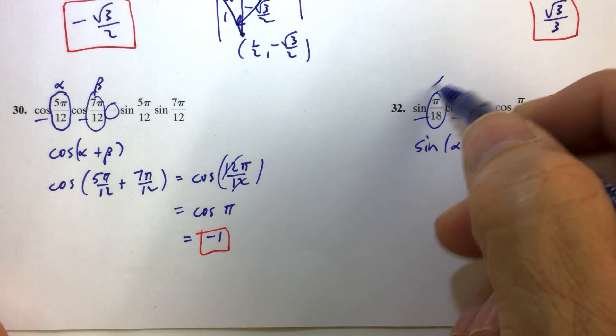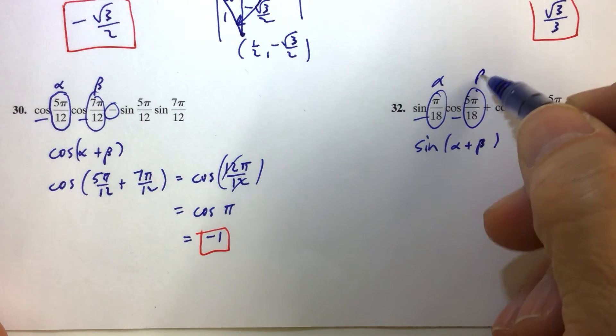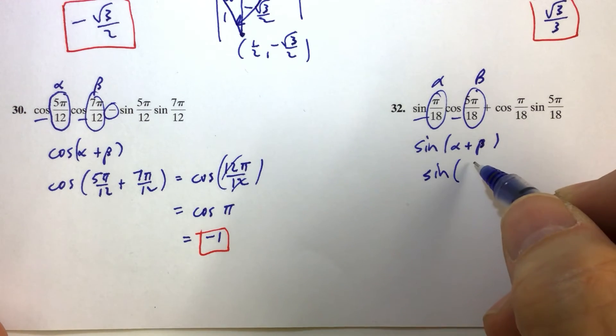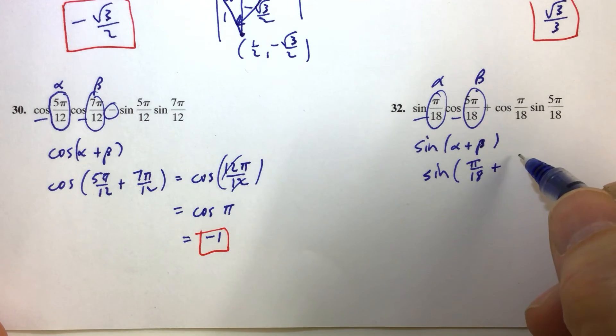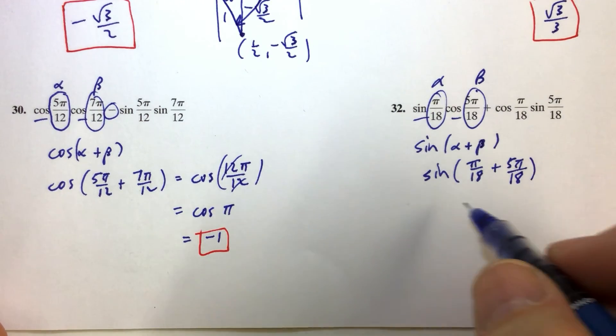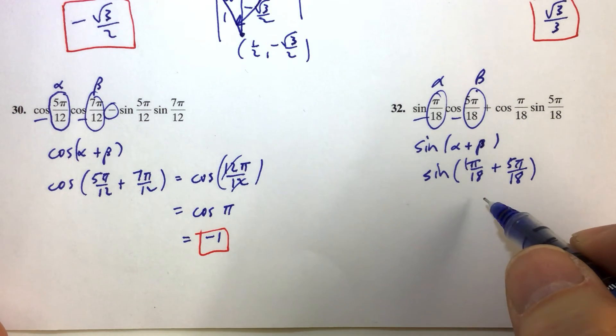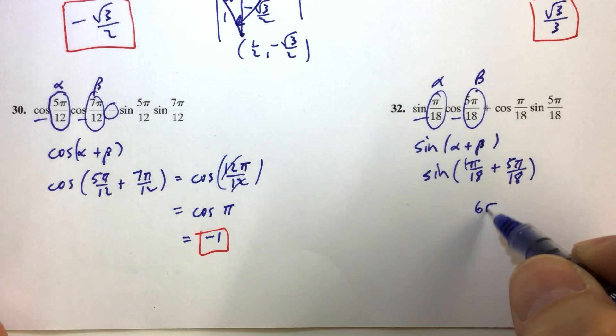And then what's our alpha? Well our alpha is the first angle, our beta is the second angle, and by now, hopefully we're getting the hang of this. We have pi over 18 plus 5 pi over 18, and 1 pi over 18 plus 5 pi over 18 is 6 pi over 18.